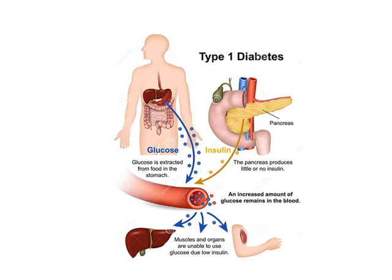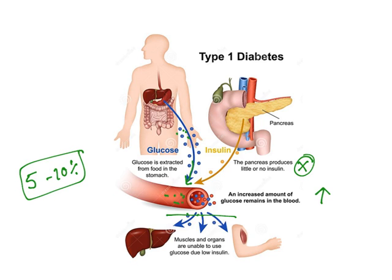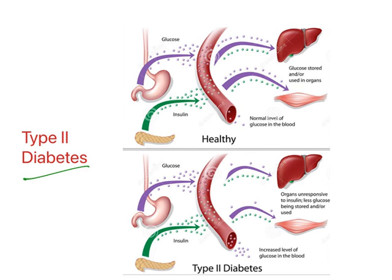Type 1 diabetes: whatever glucose gets into the blood would be taken into cells in the presence of insulin, but pancreas produces little to no insulin in Type 1. So the glucose remains inside the blood and that increases levels of glucose in the blood — the hyperglycemia condition. Of all diabetics, only 5 to 10 percent belong to Type 1 diabetes, which is an autoimmune disease. The majority of people suffer with Type 2 diabetes — 90 to 95 percent of people will suffer with Type 2 diabetes.